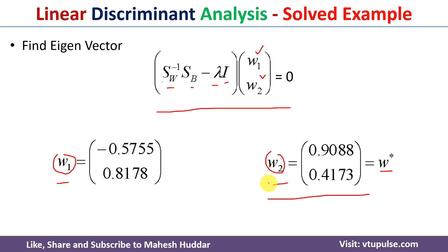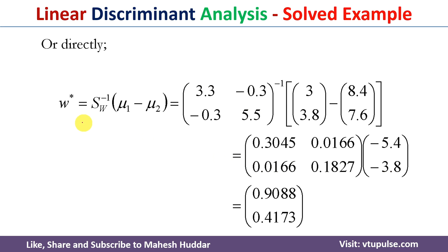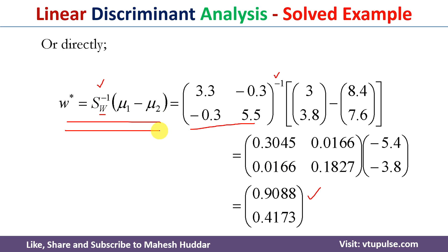There is also a direct method to calculate w* without computing eigenvalues. You can use the equation: w* equals Sw inverse times (mu1 minus mu2). Since we know Sw and both means, we calculate the inverse of Sw, multiply by (mu1 minus mu2), and get w* directly. This is a more straightforward approach.